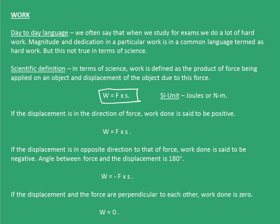The SI unit of work is joules or newton meter. Force is in newtons and displacement S is in meters, therefore newton meter. If the displacement is in the direction of force, work done is said to be positive. That means if I have an object and I apply a force F in one direction, and the object is also moving in that direction with displacement S in the direction of force, we say the work done is positive.